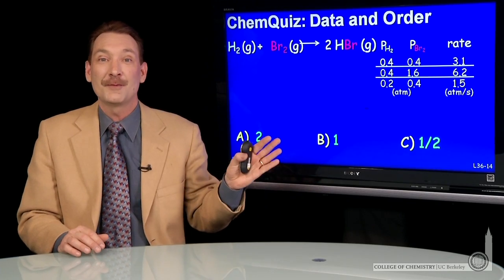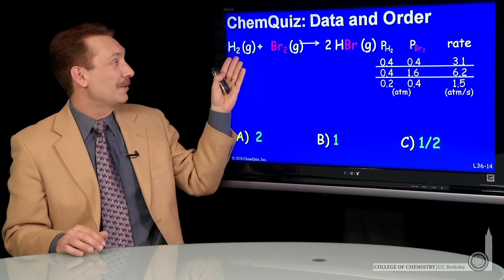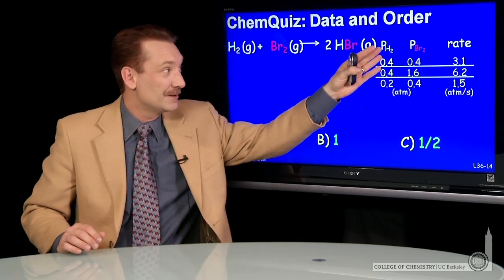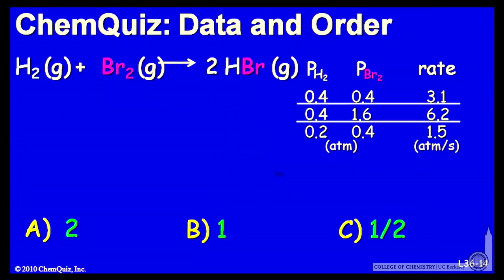We're looking at a chemical reaction and some data, trying to determine rate orders. Our chemical reaction is hydrogen gas plus bromine gas goes to hydrogen bromide, and we have some data for initial partial pressures and rates.